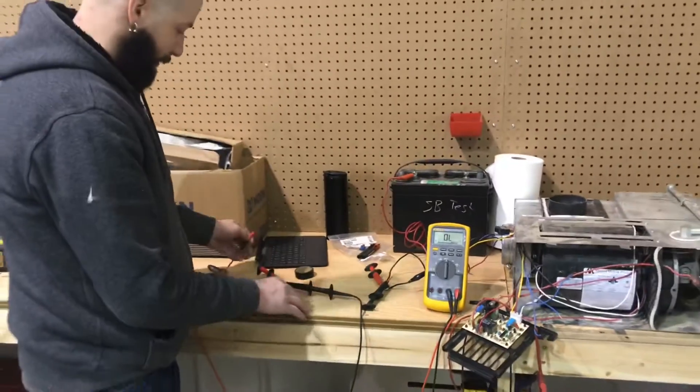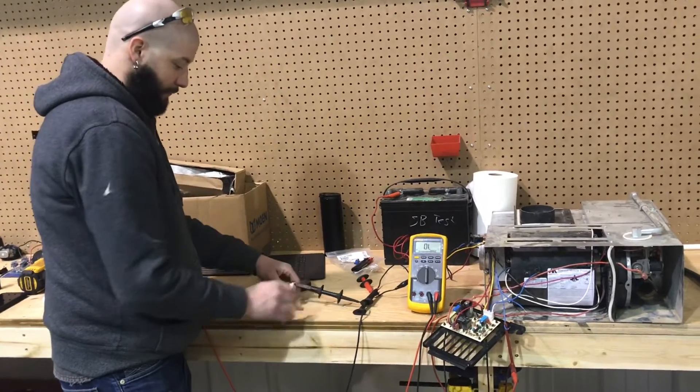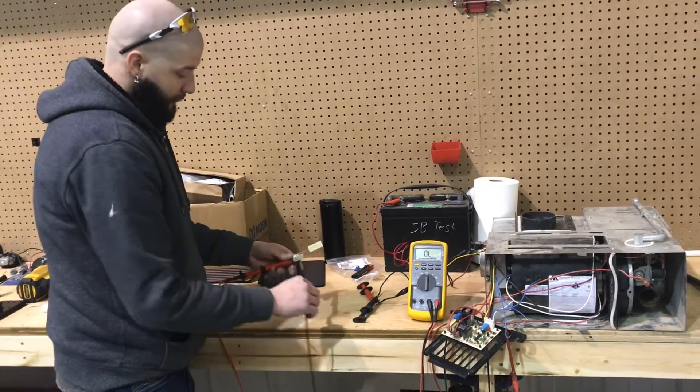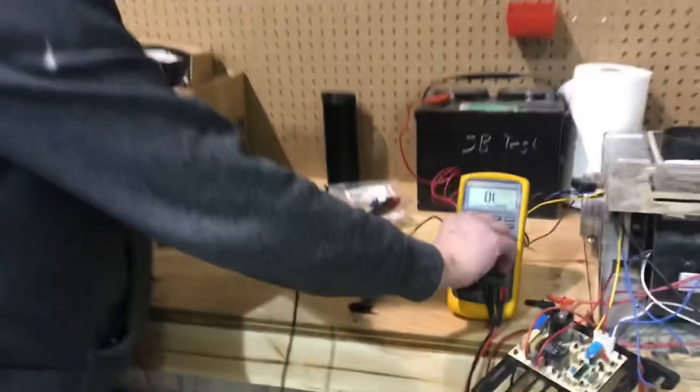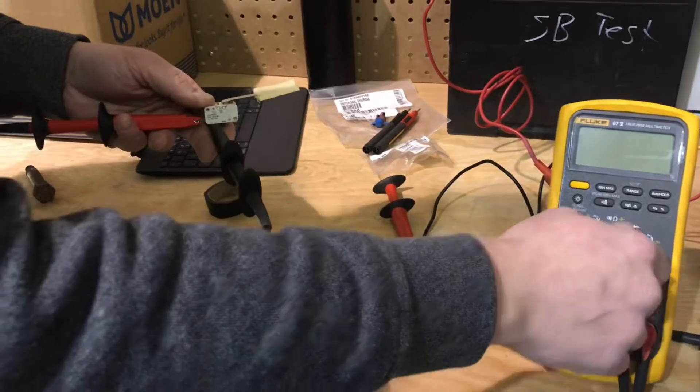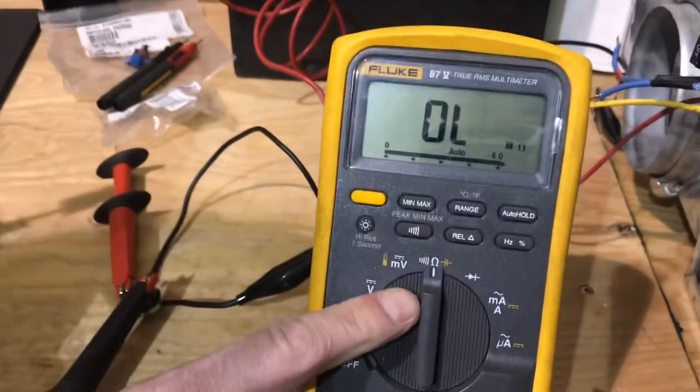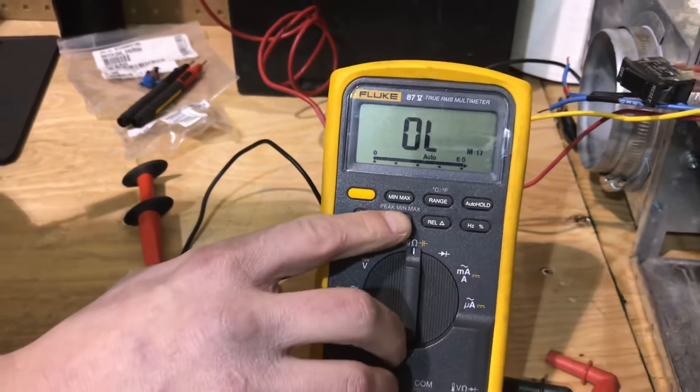We'll get into the testing of this sail switch. On your voltmeter, if you guys don't already know, turn your voltmeter up here to ohms. Then this right here allows you to be audible so that it'll actually beep at you.